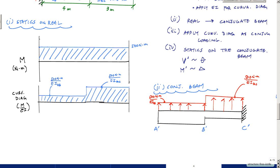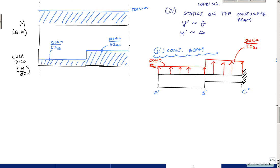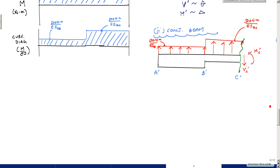Now I want to calculate the shear and moment at C prime. Rather than finding reactions, I treat this as a cut just before reaching C prime. Using the rules for internal loading: if I make a cut and look on the left side, positive internal shear VC prime acts downward, and positive internal moment MC prime acts in the expected sense.